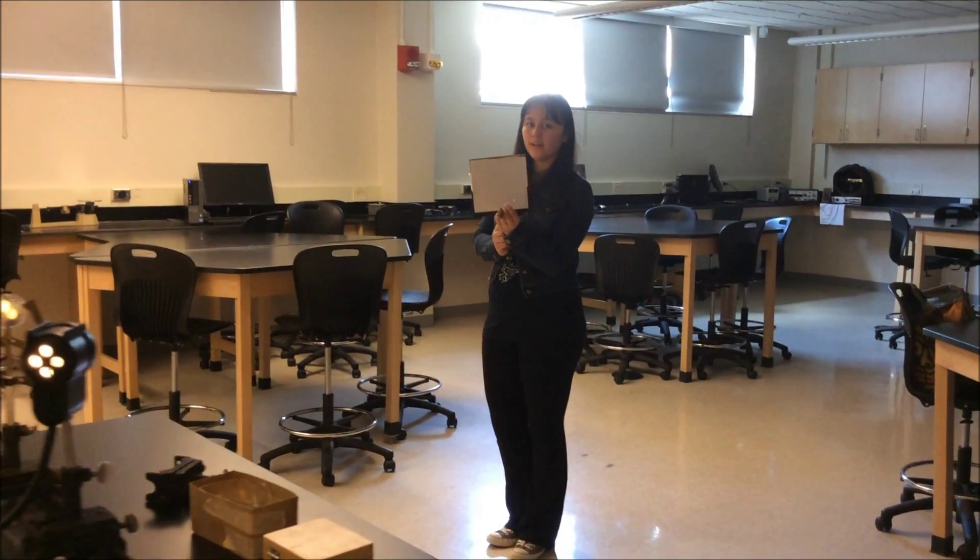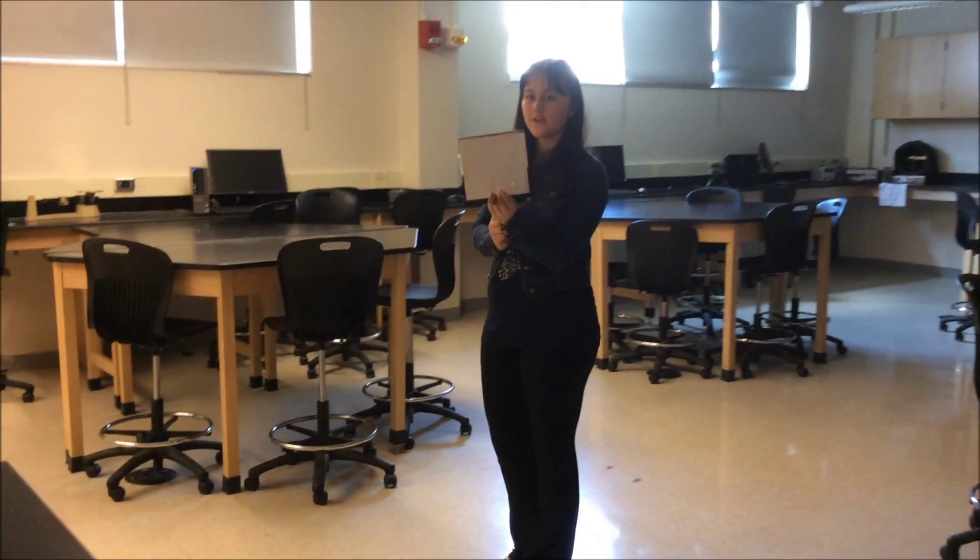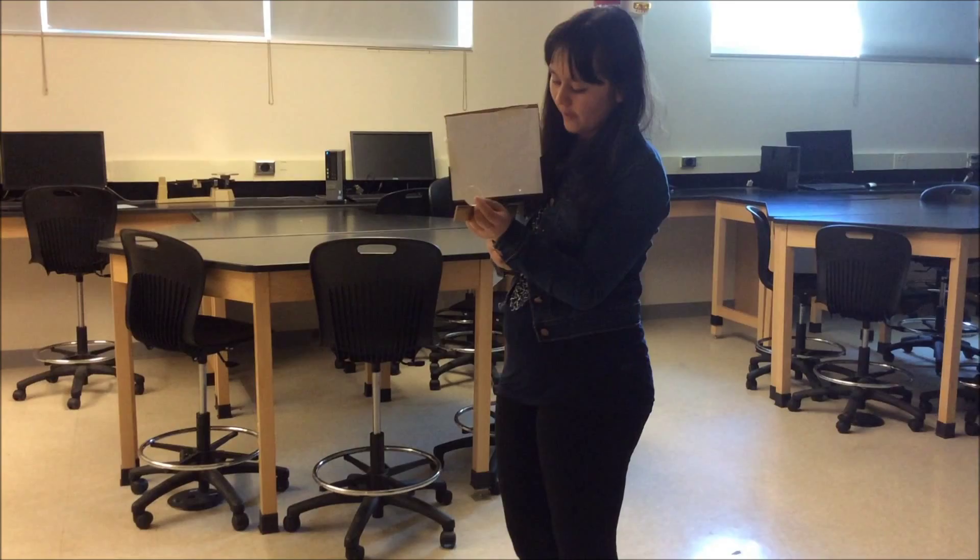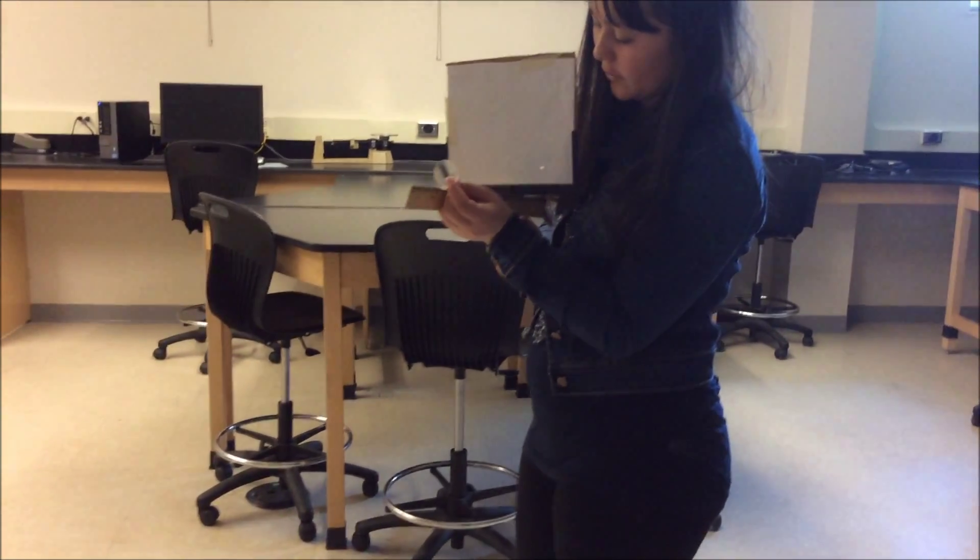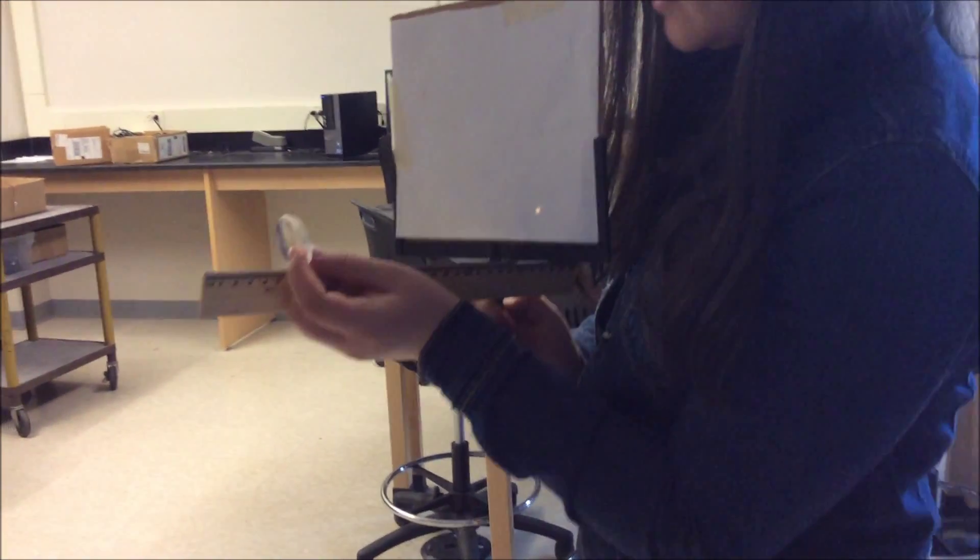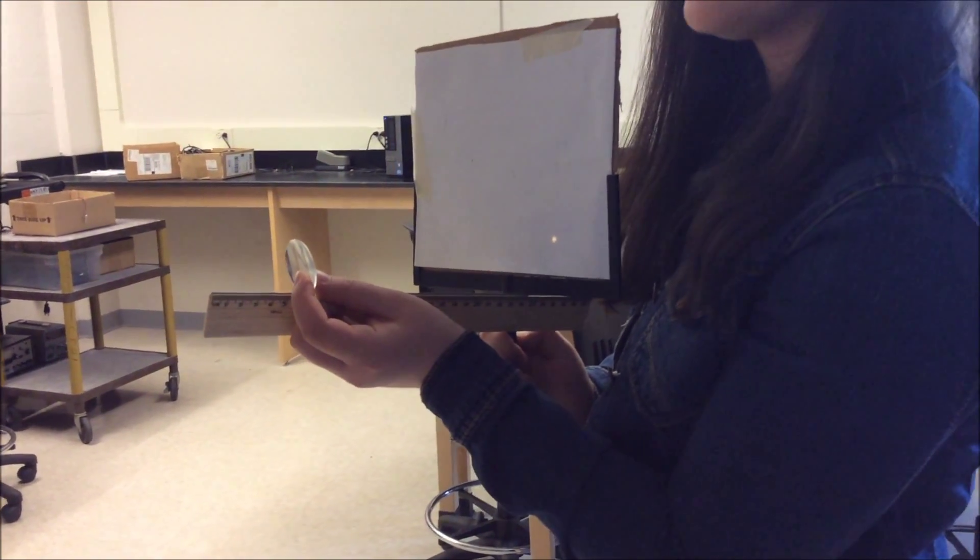So now you're going to find the focal length of the lens, and in order to do that, you're going to pick a distant object. I'm going to use the light source, and you're going to find where you see the image of the light source, and that is going to be the focal length of the lens. And you're going to do that four times and take the average.